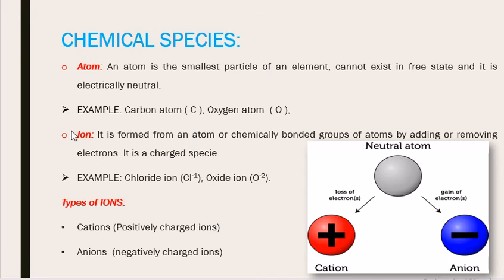Now coming to ion. Ion is formed from an atom, from a single atom or chemically bonded groups of atoms by adding or removing electrons. It is a charged species.